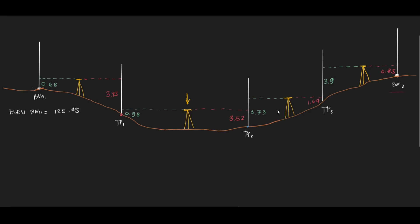What you need to do is set up your instrument after BM1, and then level your instrument. Then after doing that, you take a backsight with the rod at BM1. As you can see here, we have a backsight of 0.68. Then you add that backsight to the elevation of BM1 to get the elevation of the line of sight, which we also call the height of instrument.